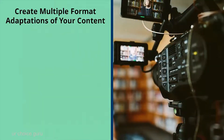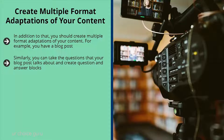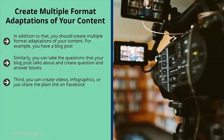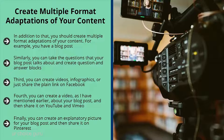Create multiple format adaptations of your content. Now that you've created your own content, the next step is to promote it on all your social media accounts and mailing list, and create multiple format adaptations. For example, convert a blog post into questions with snippets and a shortened link, then share on Twitter. Take questions your blog post answers and create Q&A blocks to post on Quora.com. Create videos, infographics, or share the plain link on Facebook. Create a video and share it on YouTube and Vimeo using your target keywords for tags and categories.